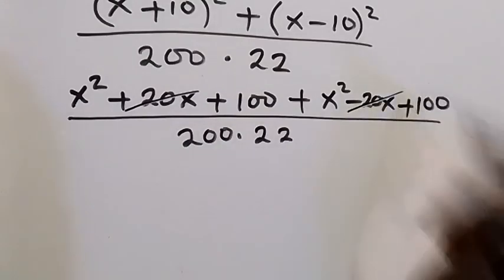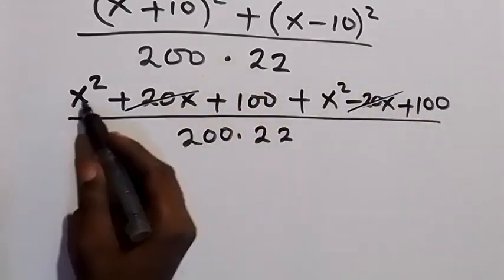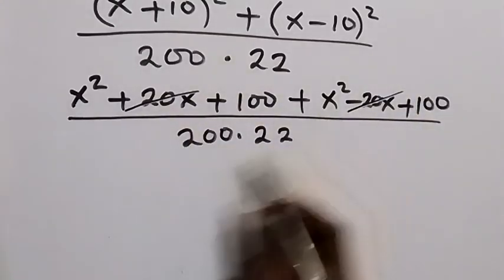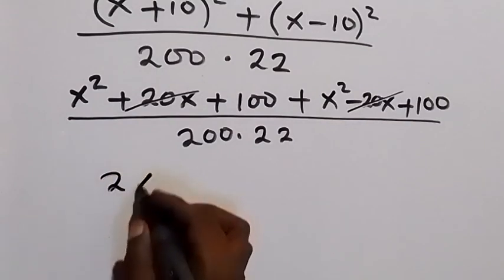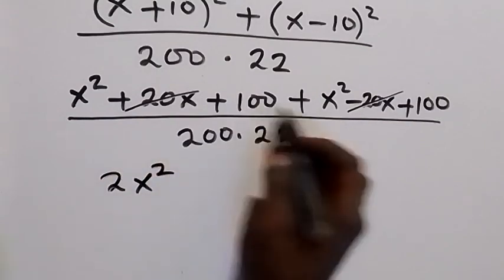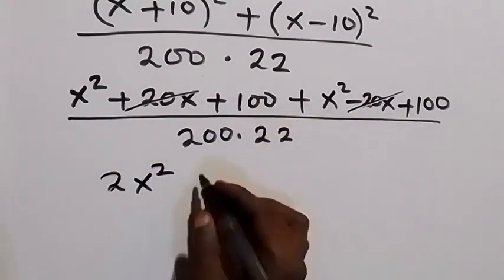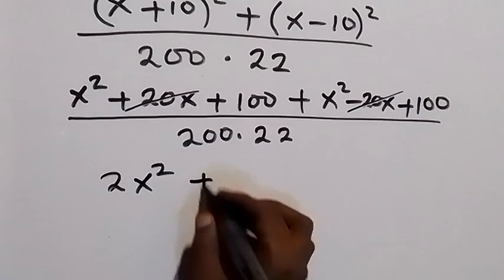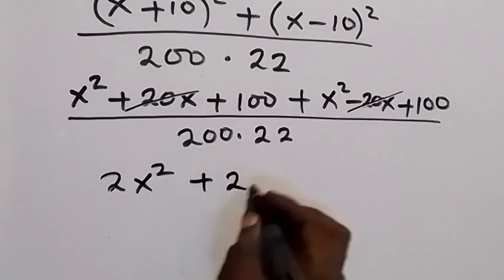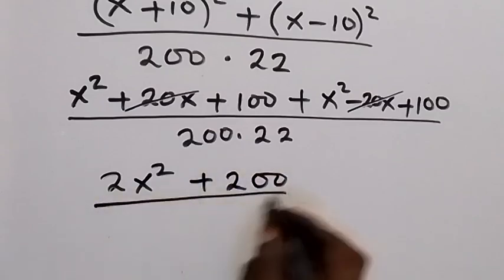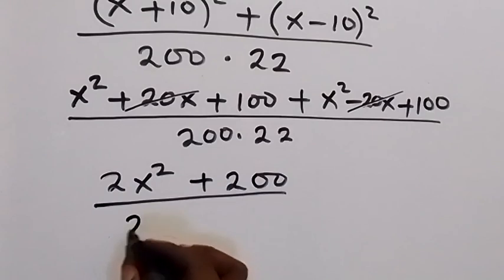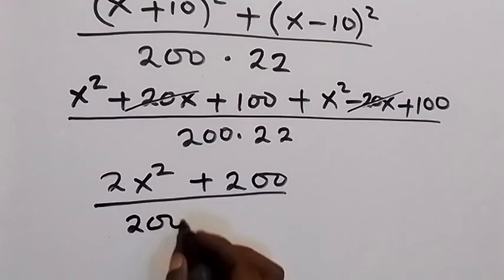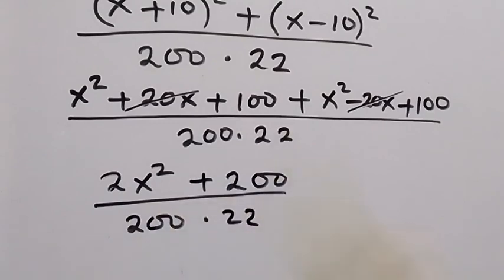The +20x and −20x cancel each other out. Then x² plus x² gives us 2x², and 100 plus 100 gives us 200, so the numerator becomes 2x² + 200, divided by 200 times 22.